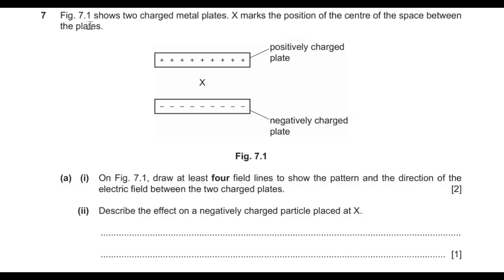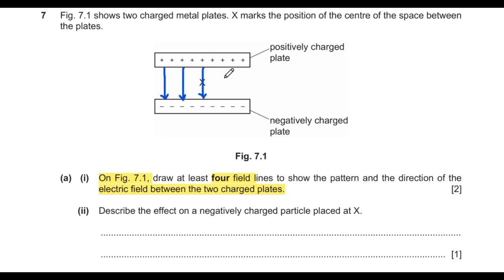Question 7 says figure 7.1 shows two charged metal plates. X marks the position of the center of the space between the two plates. On figure 7.1, draw at least four lines to show the pattern and direction of the electric field between the plates. Electric field lines emerge from the positive plate and enter the negative plate, with equal spacing between them, indicating a uniform electric field.